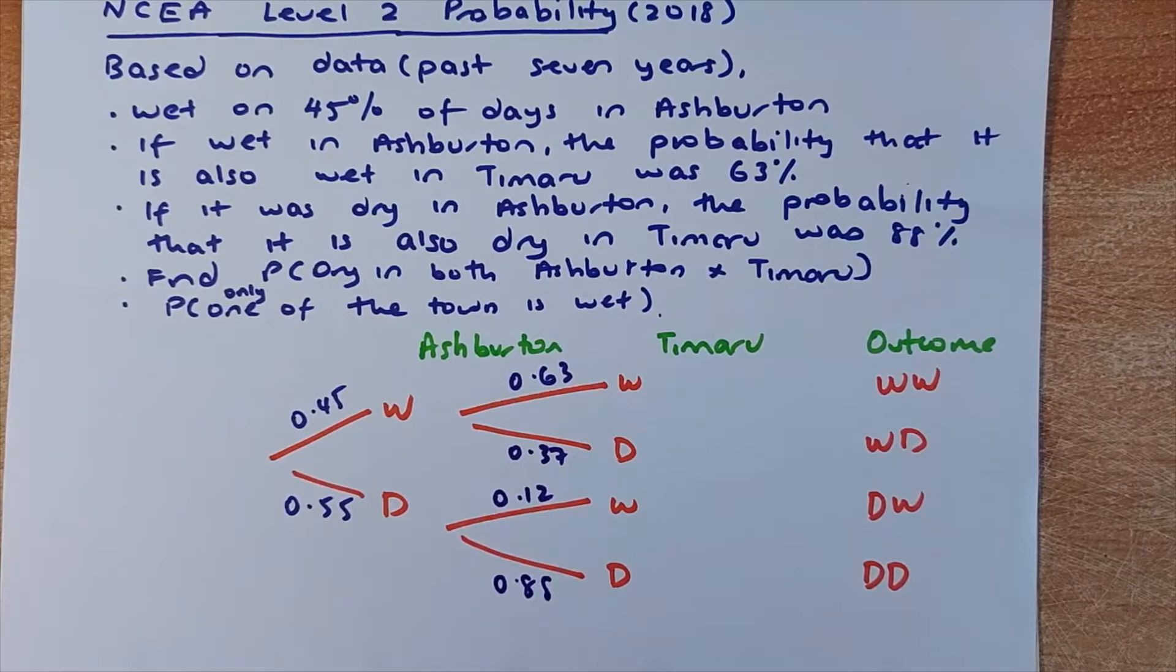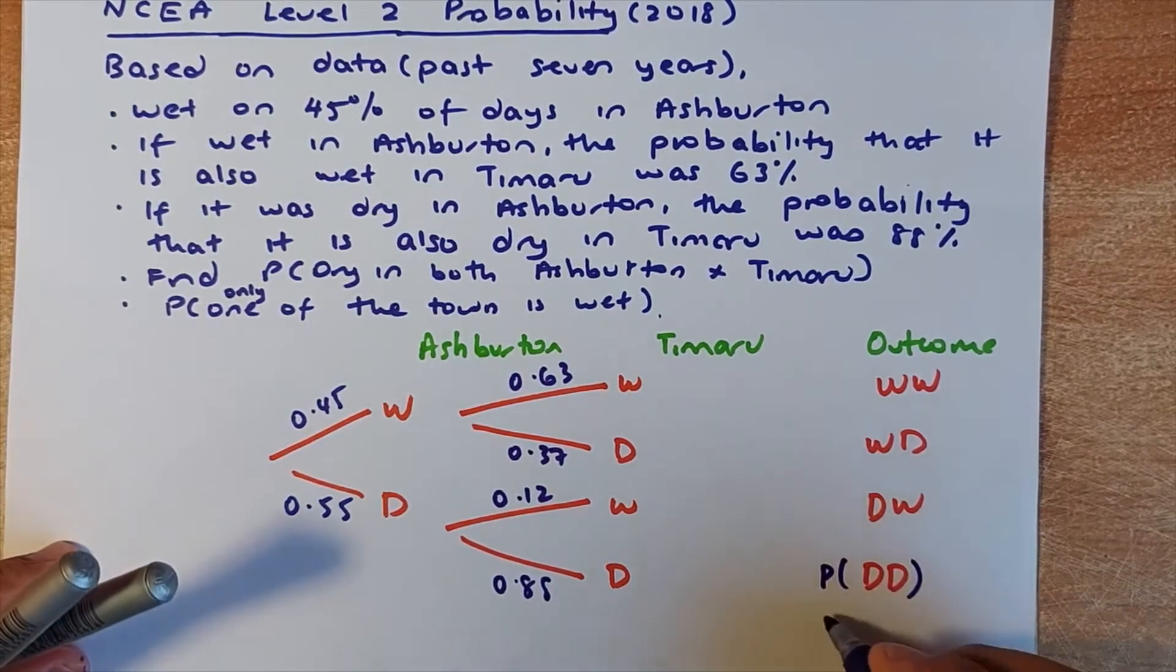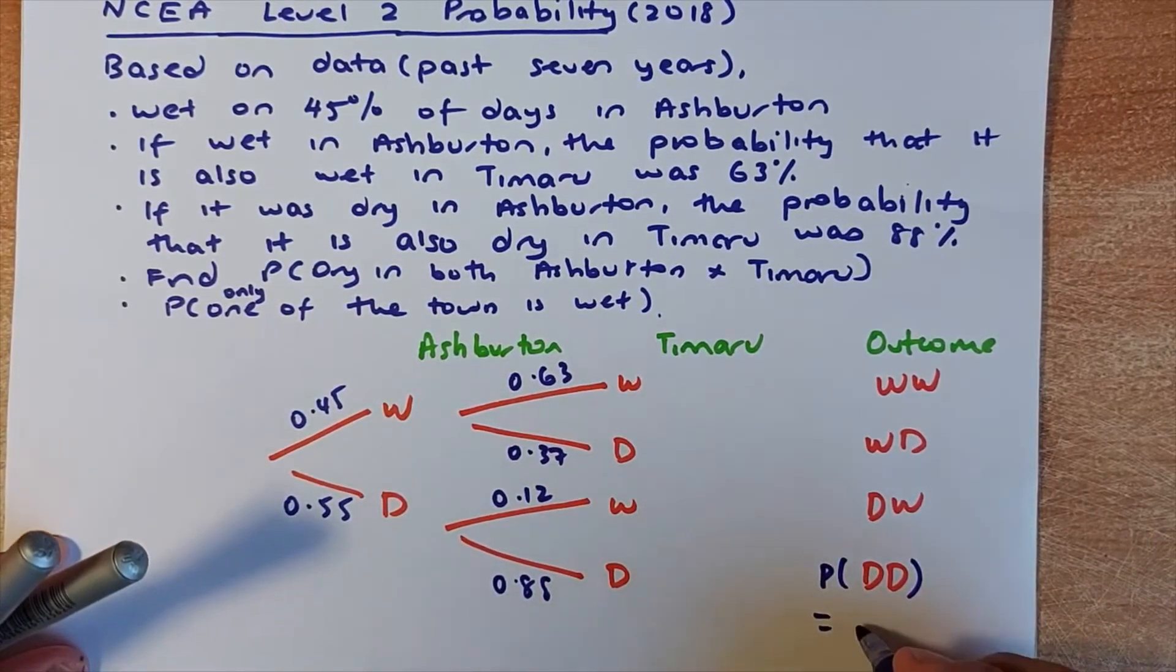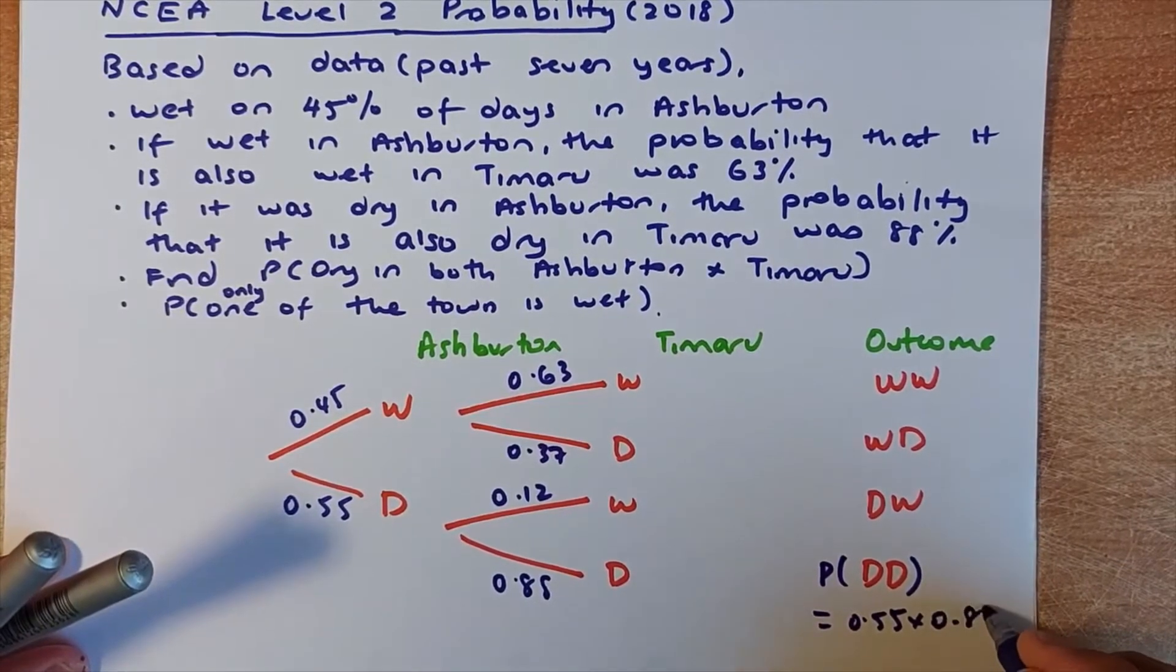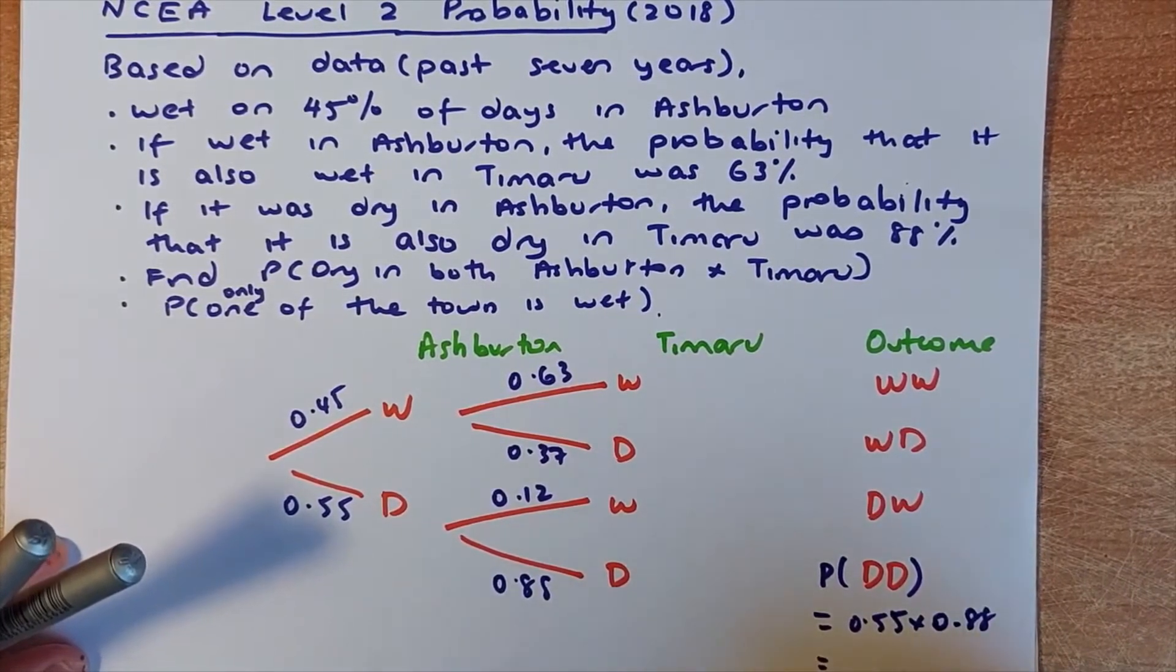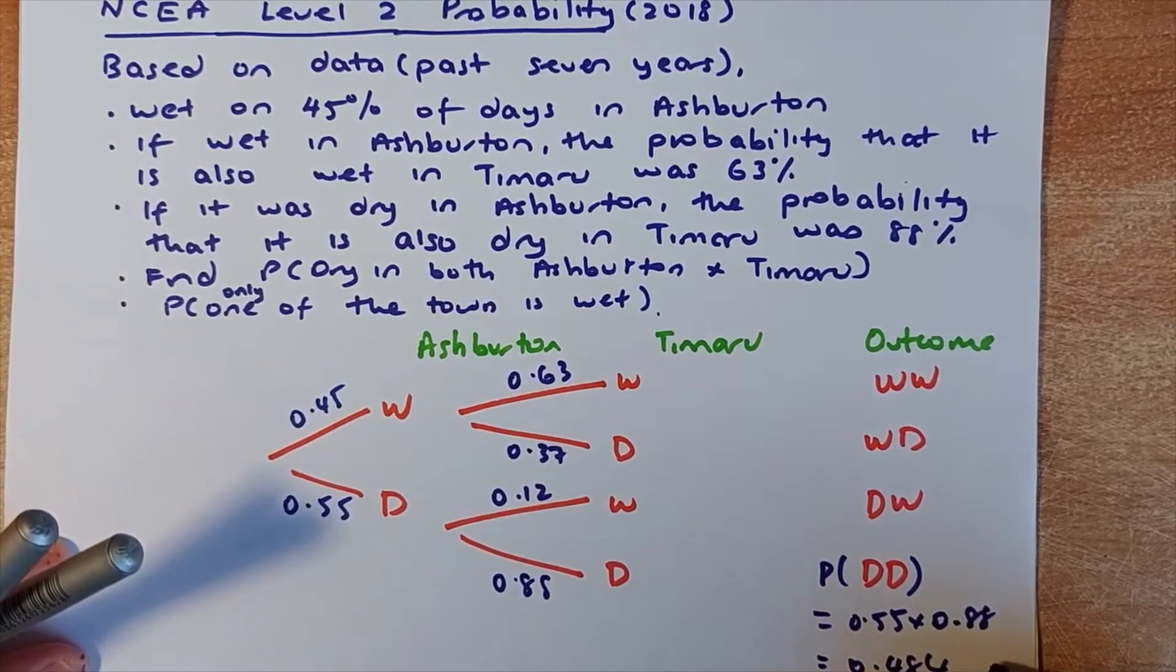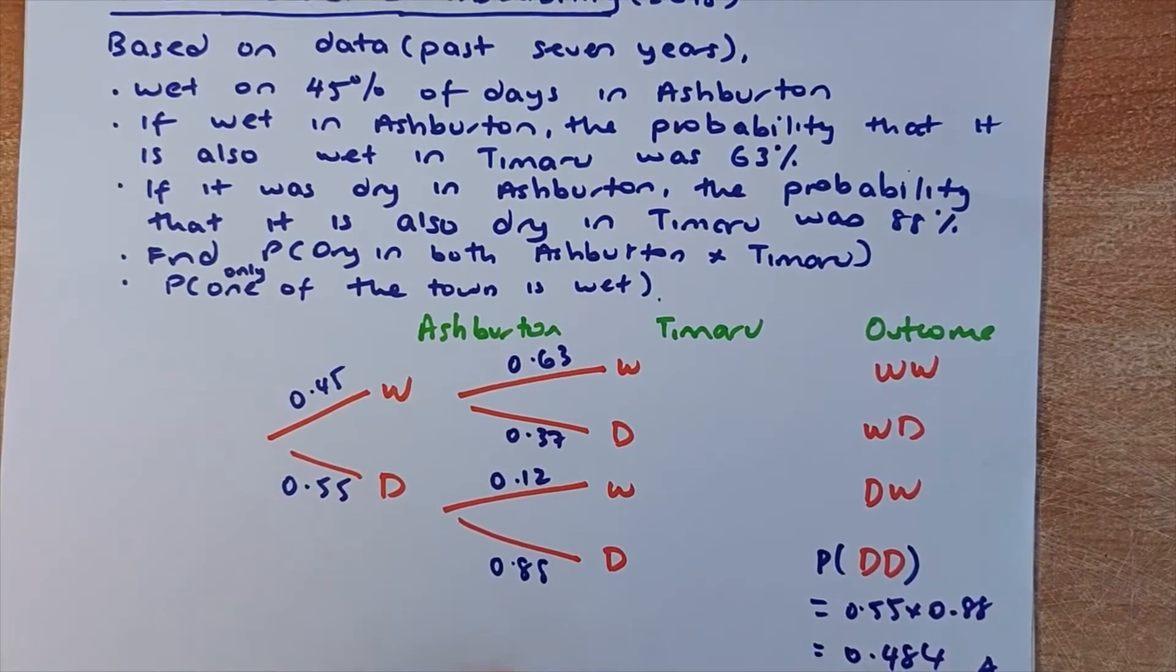That's done. And now the next step we are going to do is to answer the question. The first question is find the probability that it's both dry in Ashburton and Timaru. So what you're going to do, you multiply 0.55 multiplied by 0.88. Put in your calculator and the answer is 0.484. That will give you an achieve.